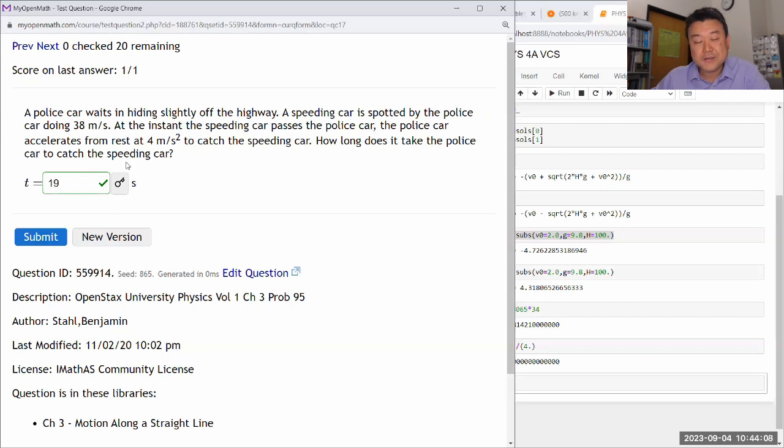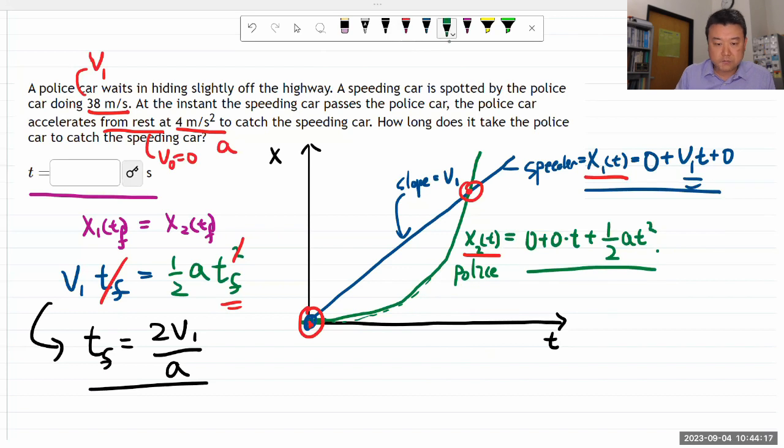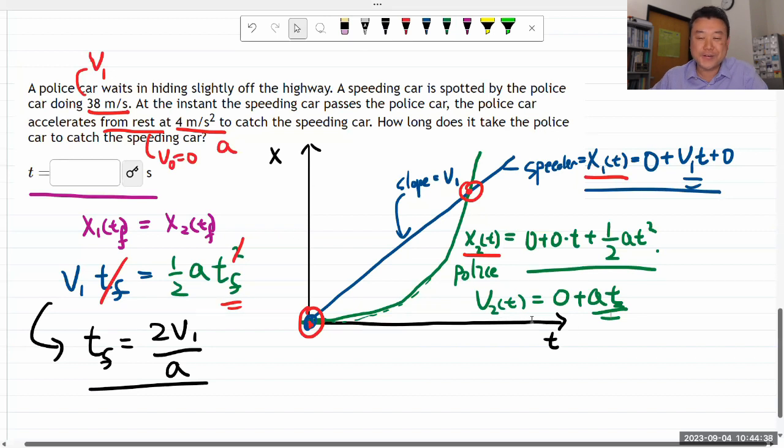And actually, if you plug in this number into the expression for the speed of the police car. So, you know, the expression for the speed of the police will be initial speed plus at. And when you plug in time here, you will find that the police is going at 76 miles per second by the time he catches up, which, you know, this is not a realistic scenario.